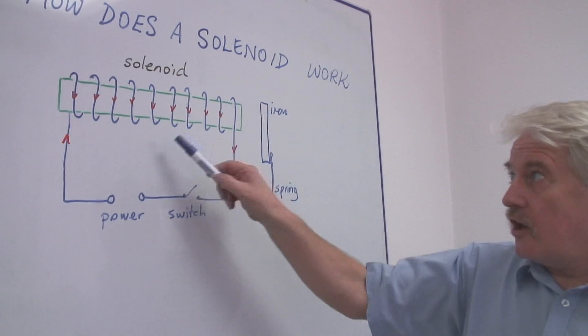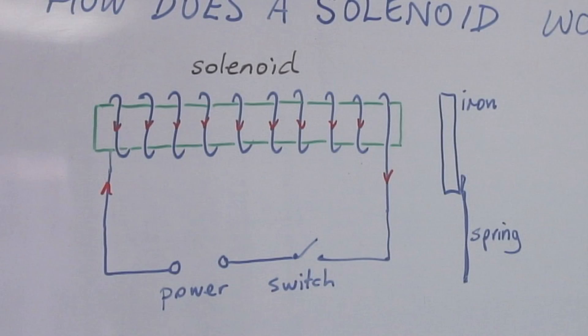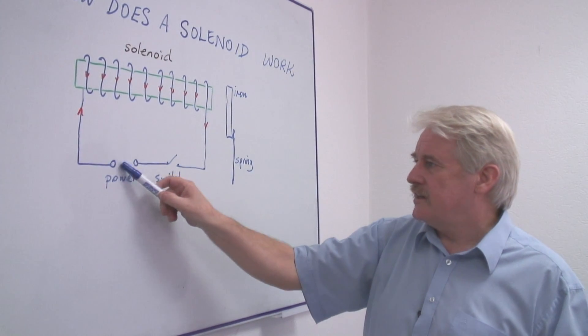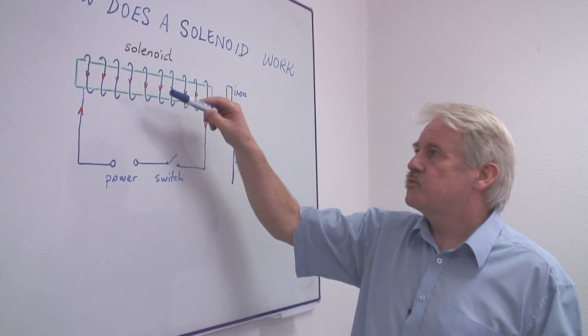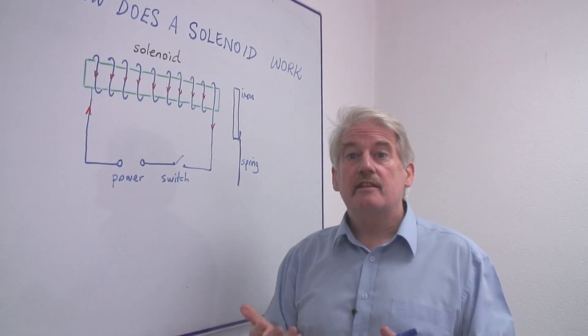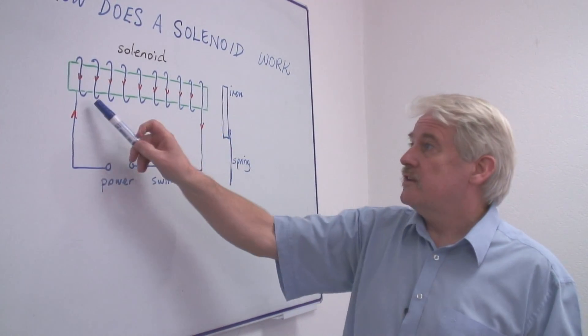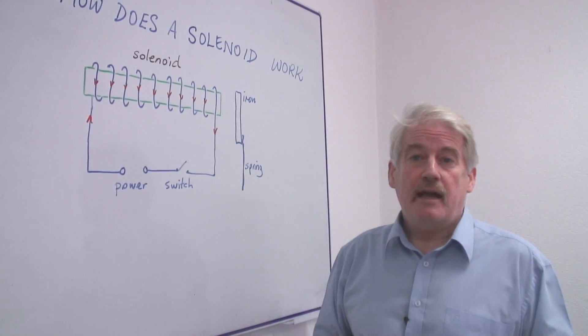Now the solenoid works because an electric current, as you can see, an electric current indicated by these red arrows flows through the wire. That's provided by a power supply and a switch. So we can switch this electric current on and off. This electric current creates a magnetic field. And in fact, this solenoid, when it's switched on, becomes a magnet.